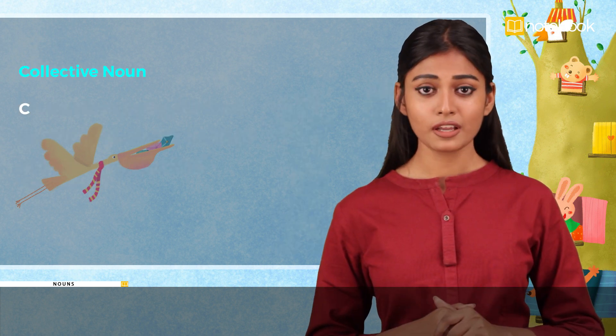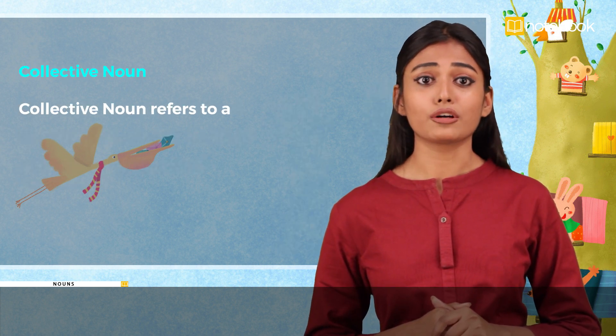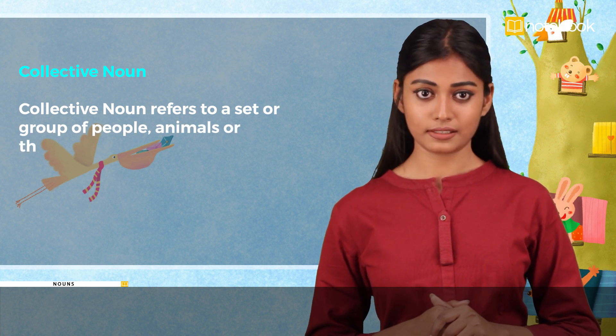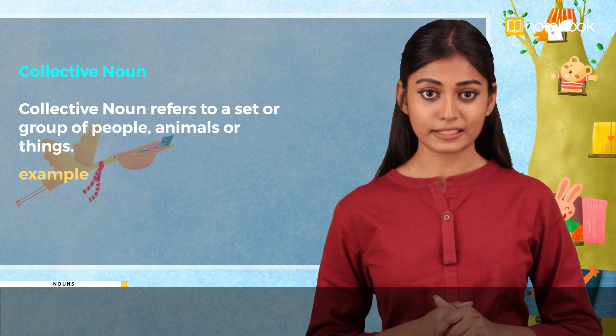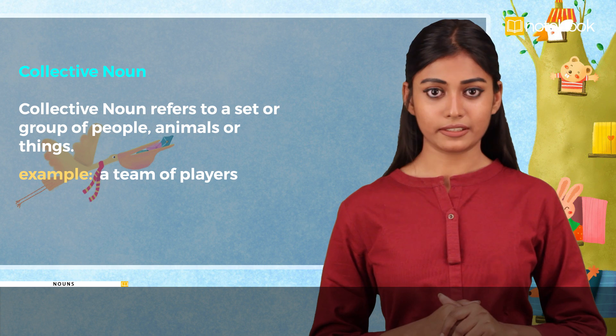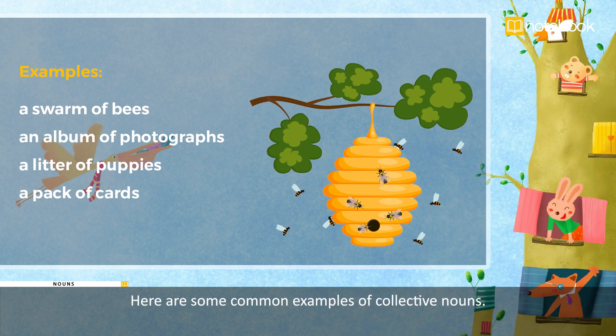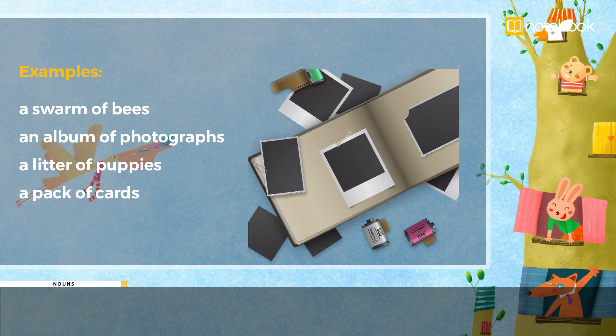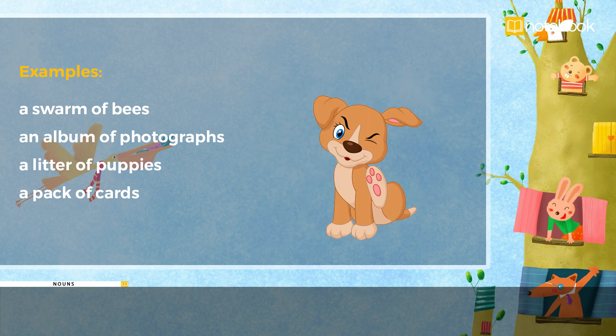Collective noun refers to a set or group of people, animals or things. For example, a team of players. Here are some common examples of collective nouns: a swarm of bees, an album of photographs, a litter of puppies, a pack of cards.